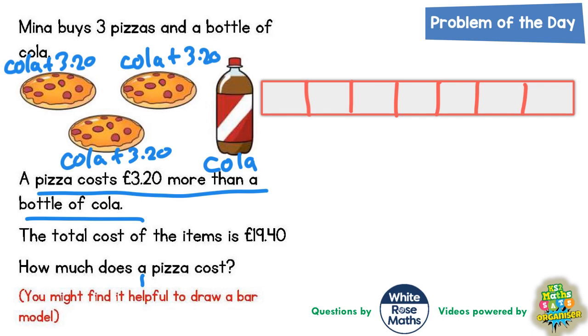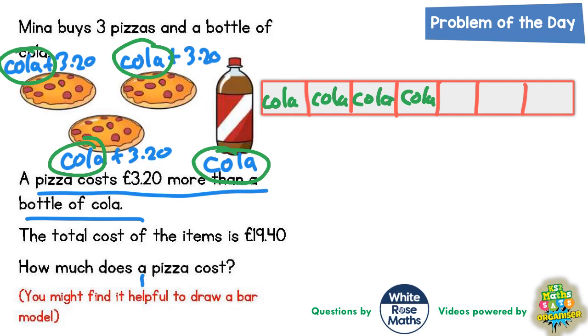The reason why we need seven sections is because we've got the original bottle of cola plus this cola, this cola, and this cola. So that's four colas. So cola, cola, cola, cola. So that's four colas.